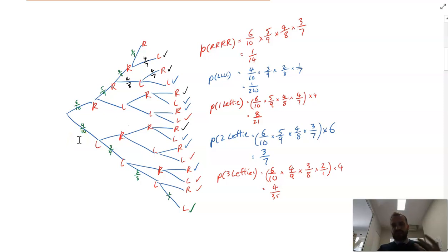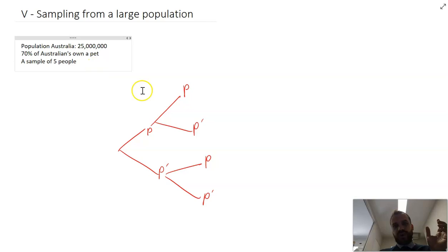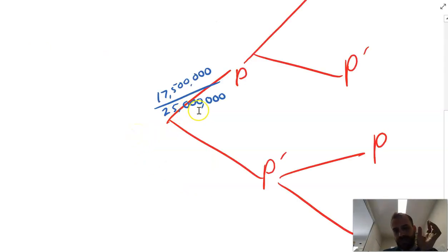So you would think that for our sample from the Australian population we would need to do something similar. Pick a sample of five, but this tree diagram is just a sample of two because I'm just trying to prove a point here. Let's look at the probability of the first person in our survey having a pet. There are 25 million people in Australia and I said that 70% of them have pets. That means that 17.5 million people have a pet.